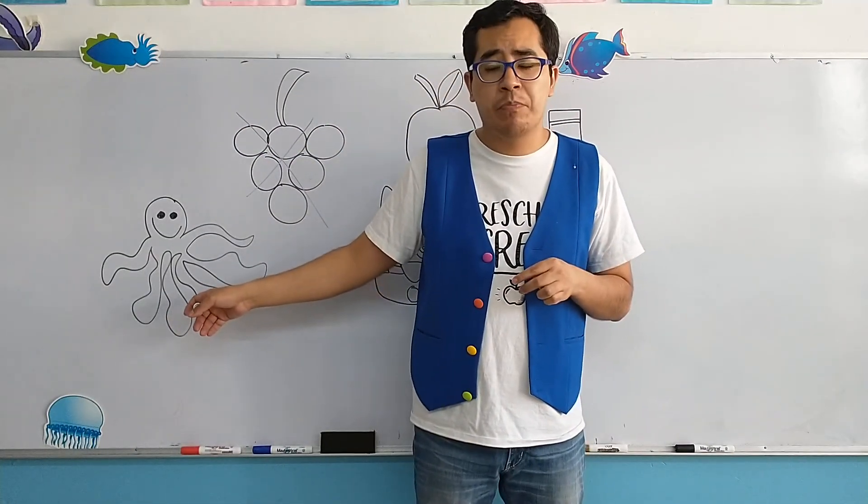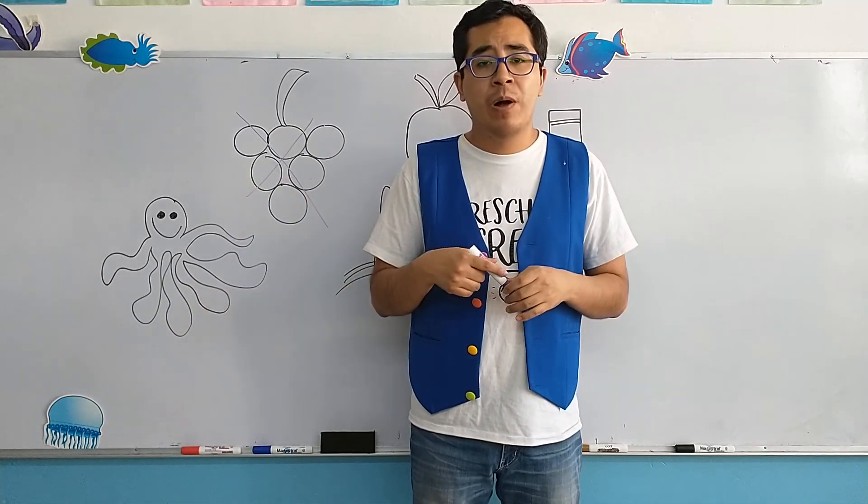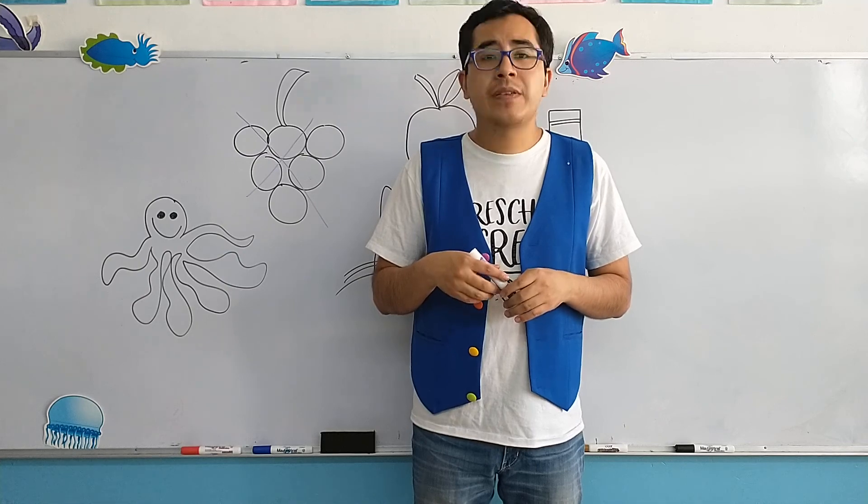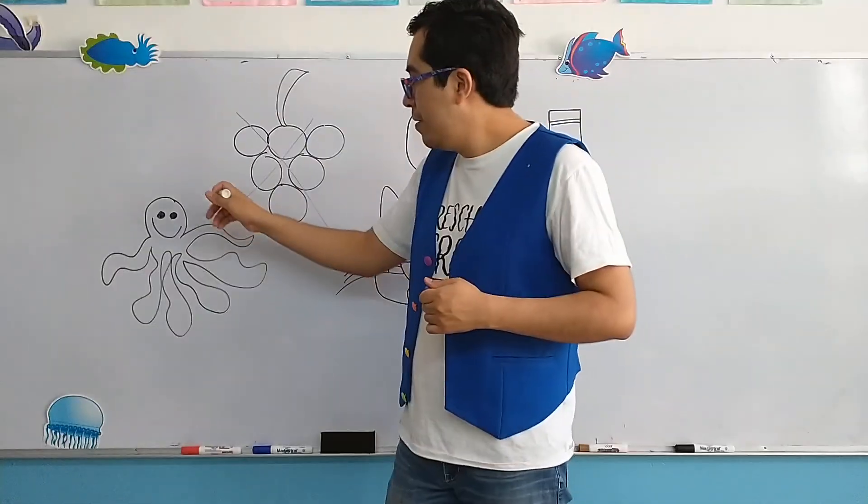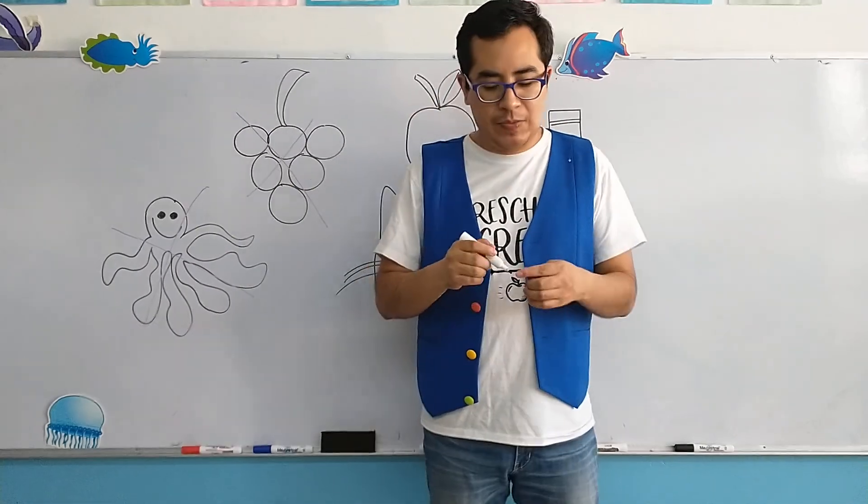Now let's continue with this animal right here, which is the octopus. Now what about the octopus? Is it color purple? Yes, it is. So let's mark it with an X.